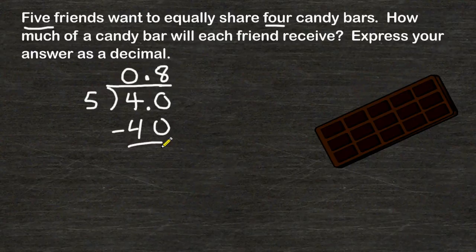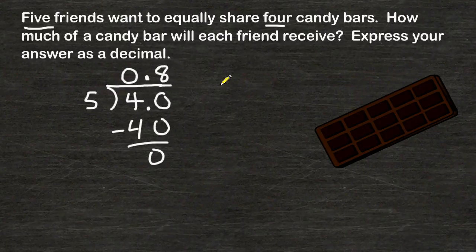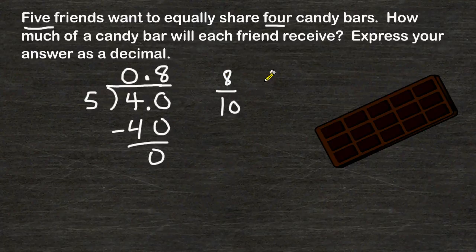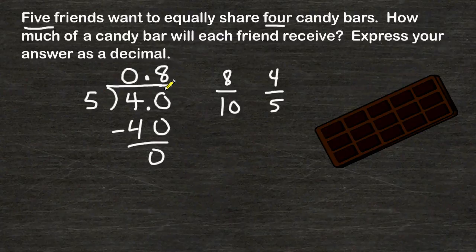So we would say that each friend will receive eight tenths of a candy bar. Now if you were to express that as a fraction, we could write eight over ten, and we may reduce that further to four fifths. Each of the friends will receive four fifths of a candy bar. But because they asked us to express it as a decimal, we would leave it as 0.8.